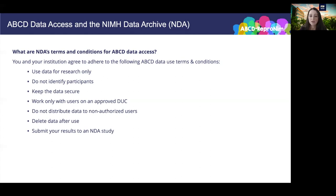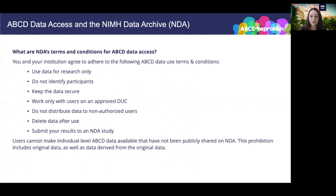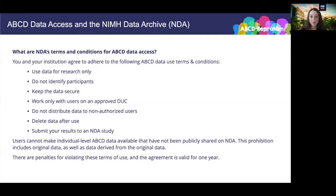You are required to associate your publication with the underlying data in the NDA if you analyze ABCD data and publish it. Users cannot make individual level ABCD data available that have not been publicly shared on NDA — this prohibition includes the original data as well as data derived from the original data. There are penalties for violating these terms of use, and remember this is a contract between you, your research institution, and the National Institutes of Health. The agreement is valid for one year, which means that if you want to access ABCD data for more than one year, you will have to submit a renewal DUC following the same procedures.